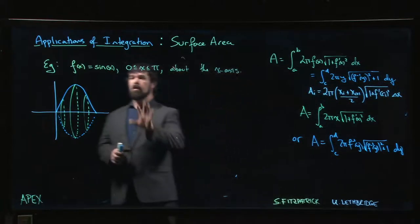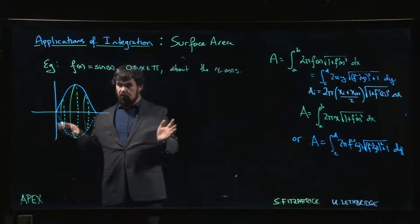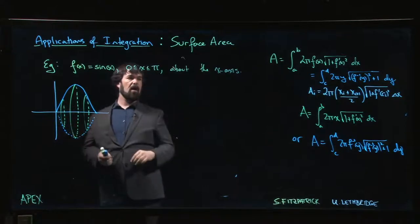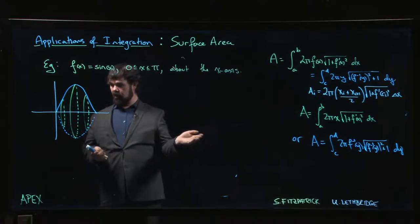Let's look at an example. Here we have the function simply sine x going from 0 to pi. We want to revolve about the x-axis.